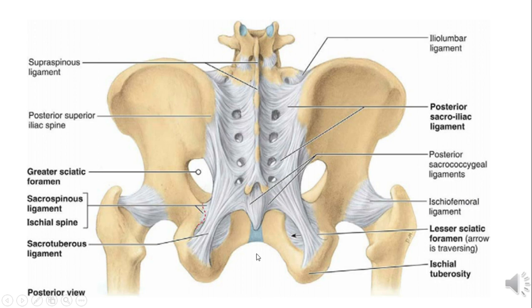The most important ligaments of the hip region are first the sacrotuberous ligament, the larger one arising from the posterior aspect of the sacrum and attached to the ischial tuberosity. Deep or anterior to it is the sacrospinous ligament, arising from the lateral aspect of the lower sacrum and attached to the ischial spine. These two ligaments convert the greater sciatic notch and lesser sciatic notch into foramina. The greater sciatic foramen connects the pelvis to the gluteal region, while the lesser sciatic foramen connects the perineum to the gluteal region.